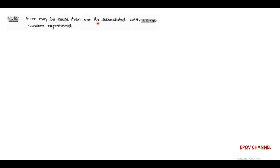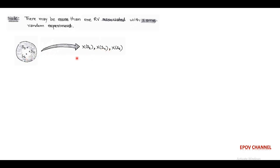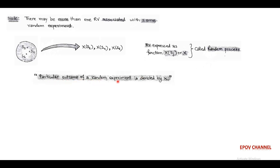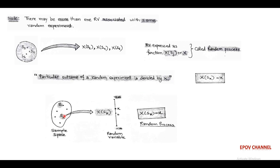In any random experiment, there are more than one random variables. For example, outcomes of the event that an even number of dots shows have sample points S2, S4, and S6, and corresponding to this subset we assign random variables x(S2), x(S4), and x(S6) respectively. The process of assigning a real number to corresponding random events is called a random process. A particular outcome or elementary event of any random experiment is denoted by small x. So the random variable in the form of a function, x(Sk), is assigned a real number small x, and this is called a random process.